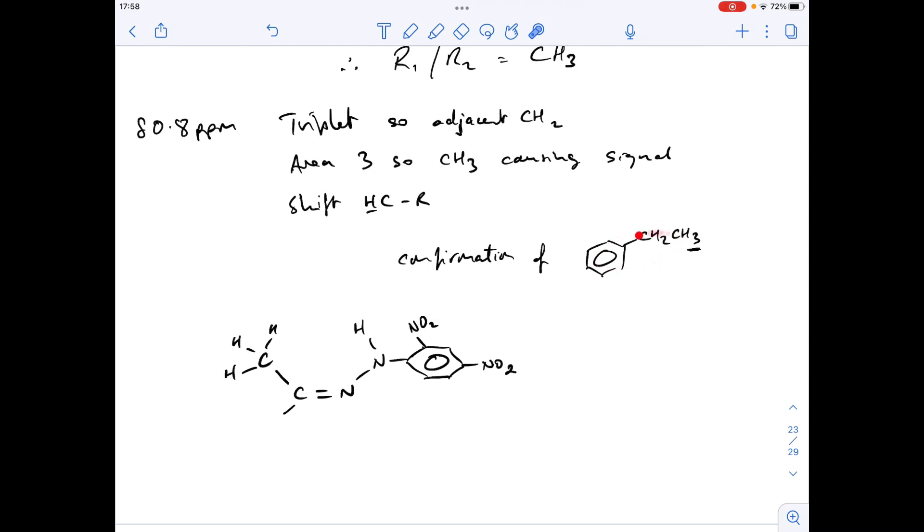We know the other R group is this. And obviously, there's 2 carbon environments from the ethyl group. So that takes us up to 10 carbon environments. So basically, we need there to be 4 carbon environments in the remaining 6. So we need a couple of equivalent sets of carbons. So that means that this aromatic group has to be attached like the way I've drawn it to give us the 14 carbon environments. So I'll just show you that.